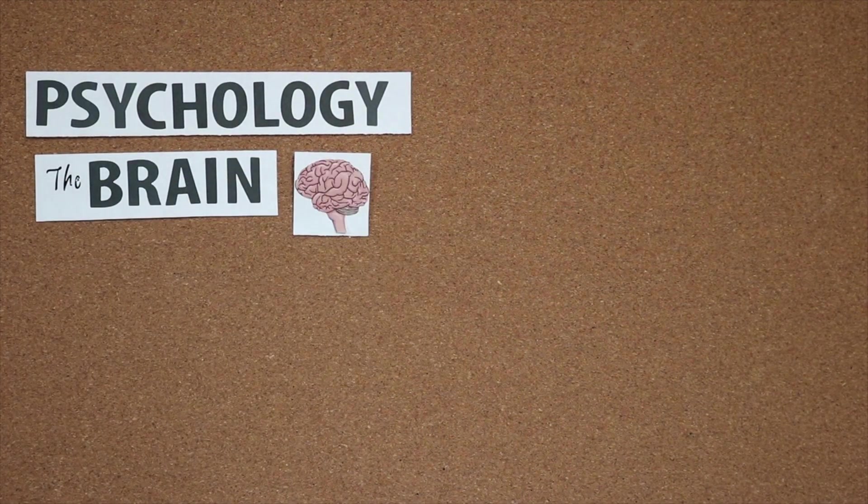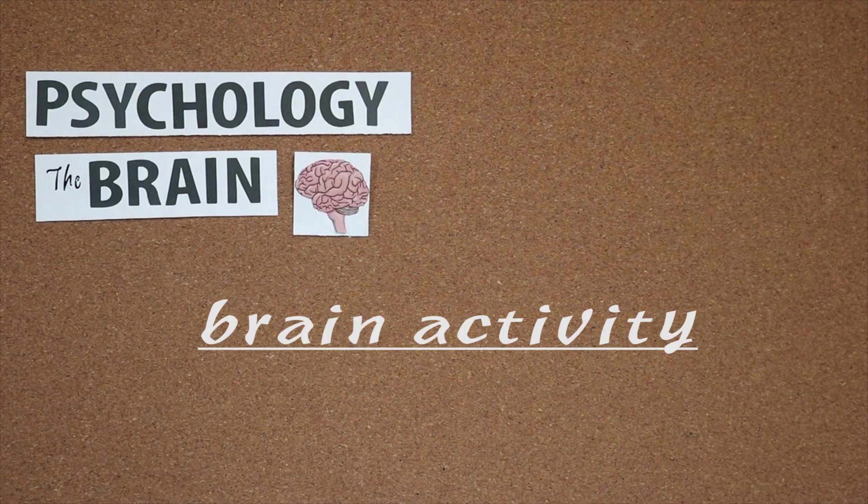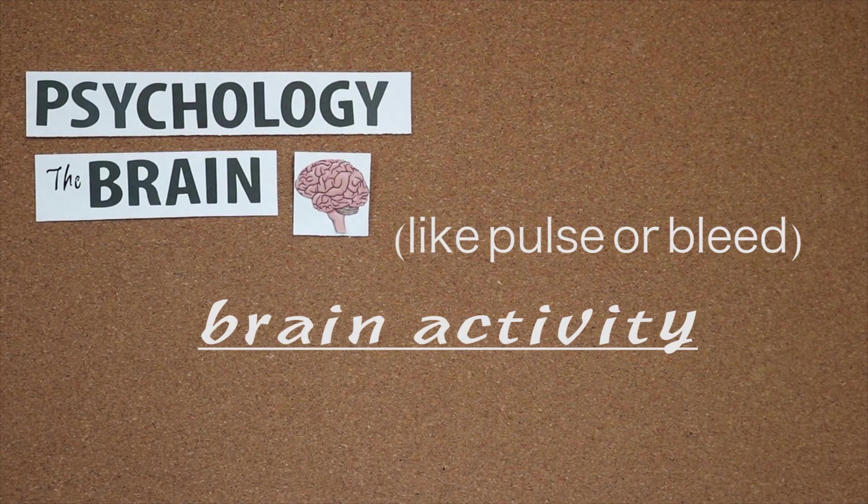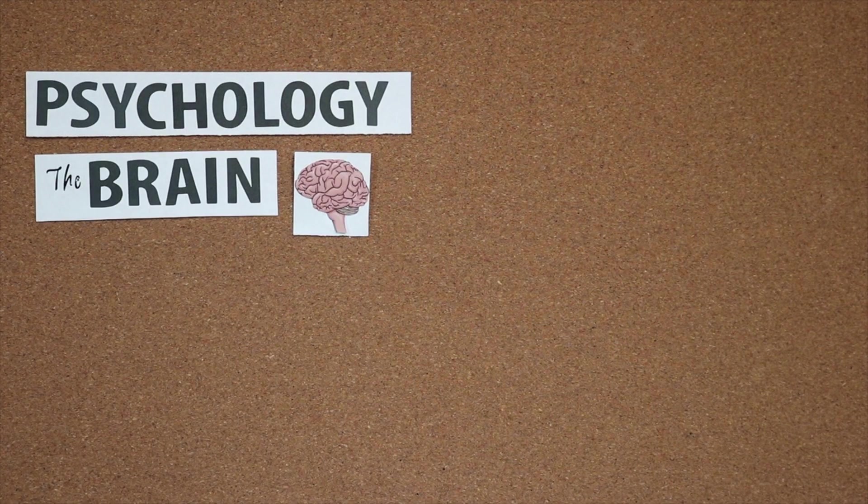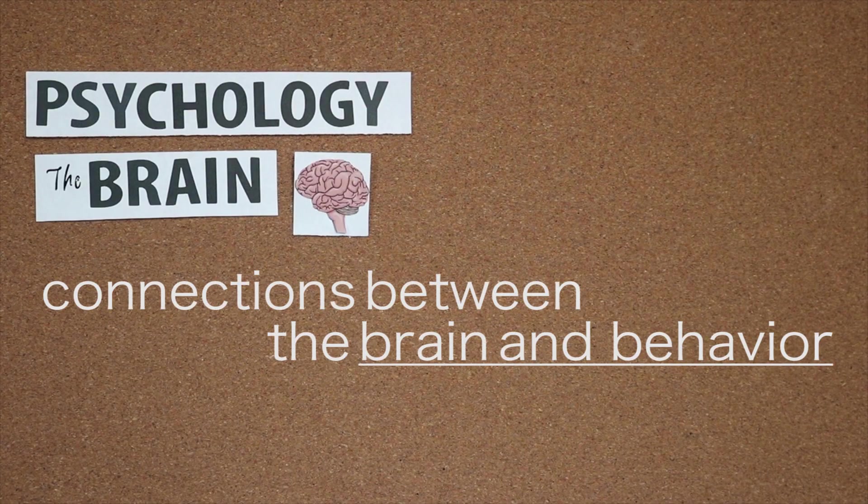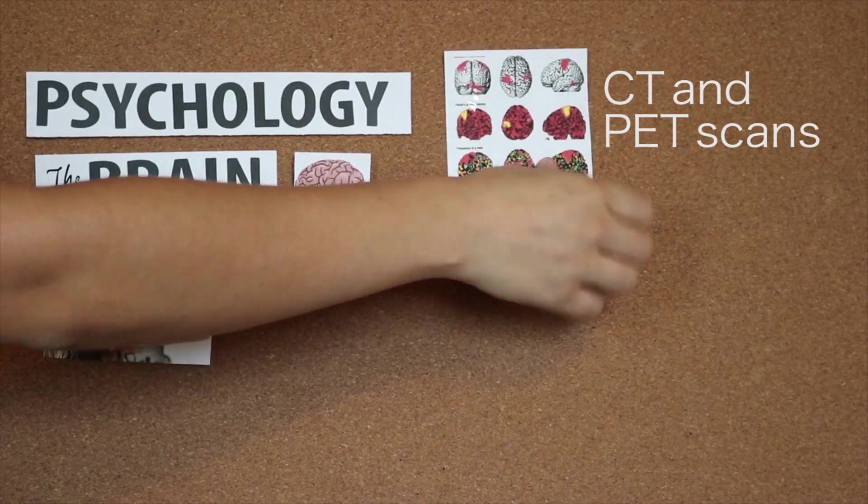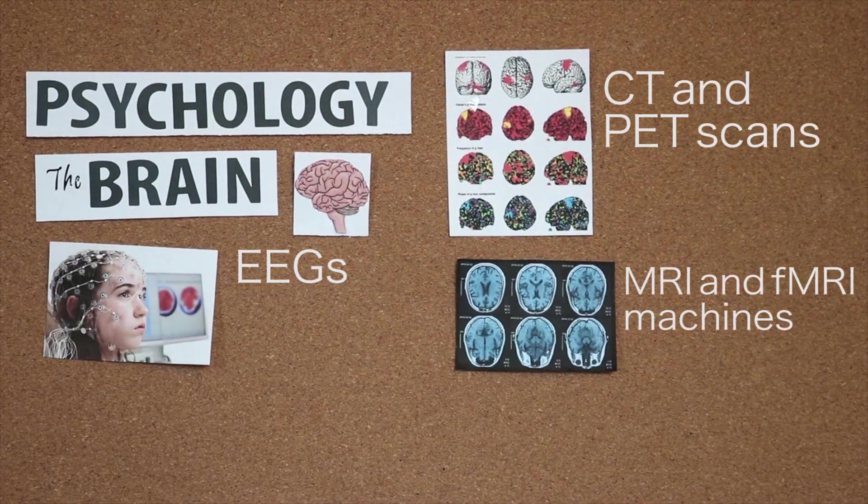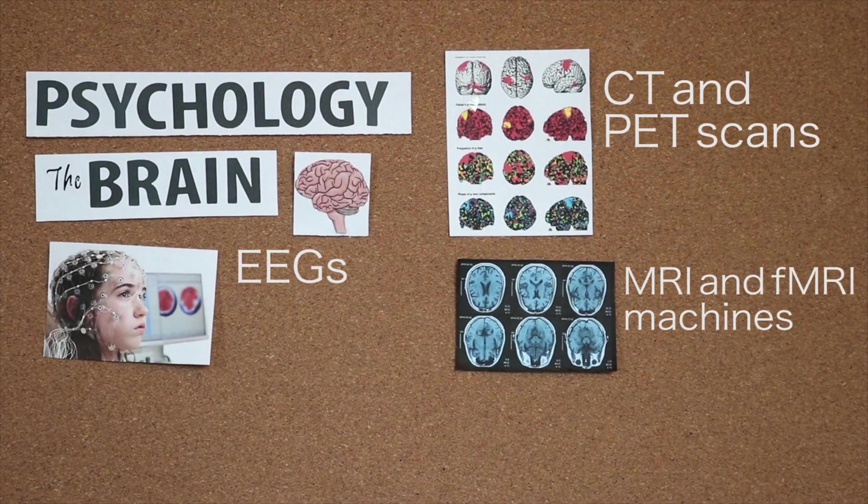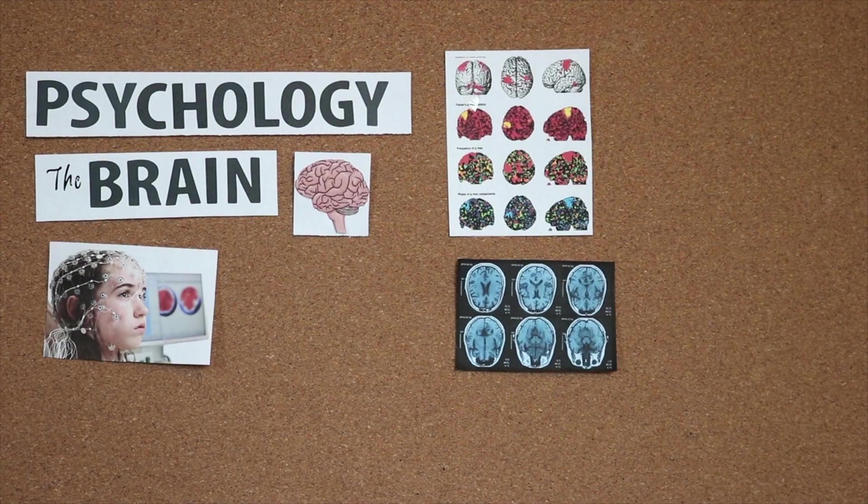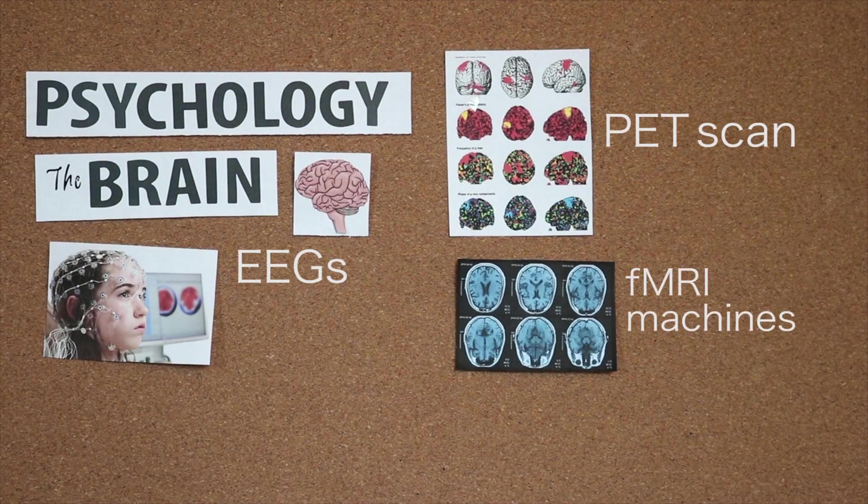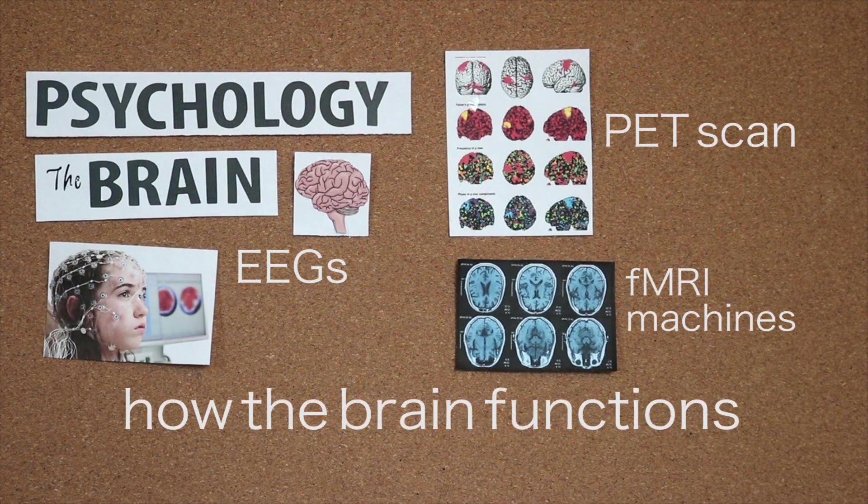As you probably imagine, it's very difficult to study brain activity. The brain does nothing on the outside to indicate anything it might be doing on the inside. This is why we use technology to try and find connections between the brain and behavior. We have EEGs, CT and PET scans, MRI and fMRI machines, all of which provide many details about the brain structure, but only some of which, the EEG, PET scan and fMRI, show us exactly how the brain functions.